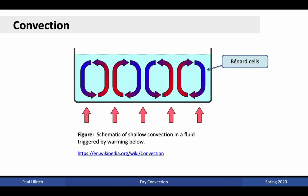Fluids heated in this manner tend to develop overturning motions, since the decrease in temperature at the top corresponds to an increase in density leading to sinking fluid, and the warming at the surface leads to less dense fluid, which leads to rising fluid. Analogously, here is a depiction of what one might see in a pot of boiling water. The water at the bottom tends to be warmer than the overlying fluid. When the temperature gradient between the bottom and the top is sufficiently large, overturning occurs in the form of Bernard cells.